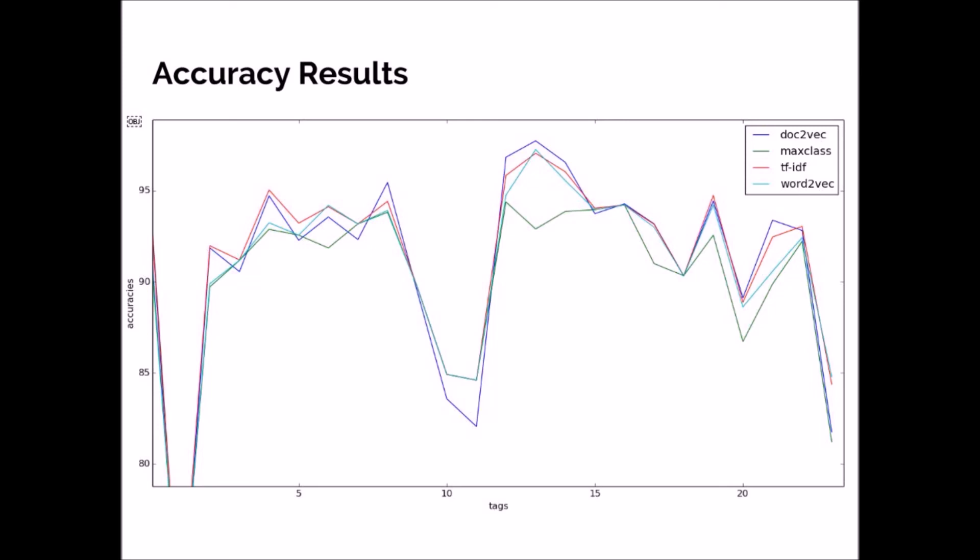It's difficult to compare Doc2Vec and TF-IDF, but Doc2Vec performs better than Word2Vec. It's also faster than Word2Vec when it comes to generating 20000 vectors.